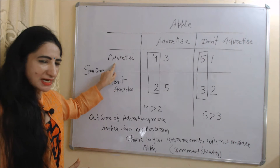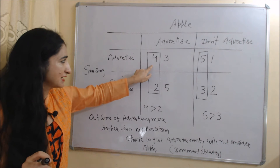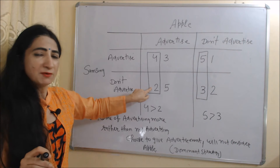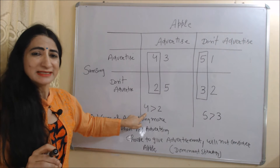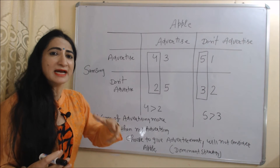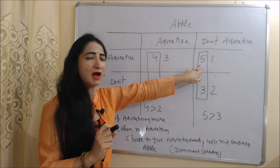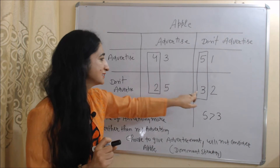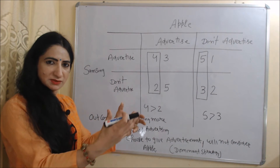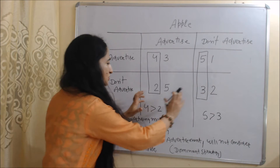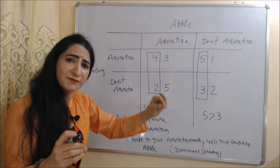Now let's talk about the dominant strategy of Samsung. Column-wise, advertise or don't advertise indicates Samsung. In the first situation, when Samsung advertises it receives outcome 4, but when it doesn't advertise it receives 2 — 4 is more than 2. In the next situation, when Samsung advertises it receives 5, but when it doesn't advertise it receives 3 — 5 is more than 3. In both situations, the outcome of advertising is greater.